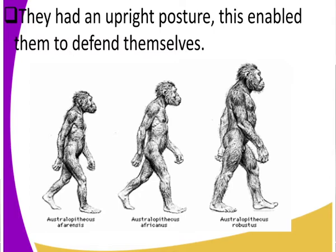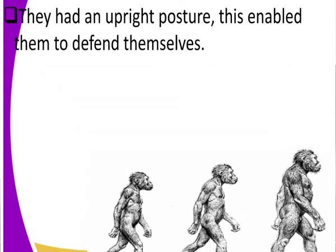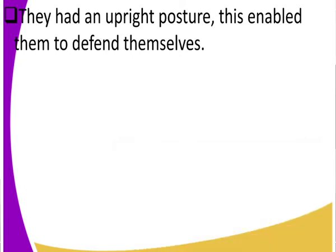Another characteristic is that Australopithecus had an upright posture, which enabled it to defend itself. You can differentiate the Australopithecus from the Aegeopithecus — the Aegeopithecus walked in a quadrupedal movement, on all fours. But the Australopithecus walked on two legs with an upright posture, and this upright posture made it able to defend itself.